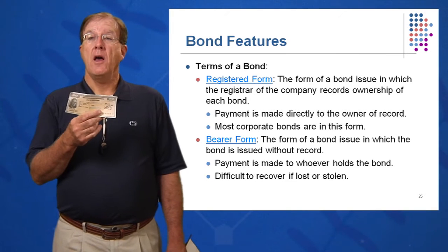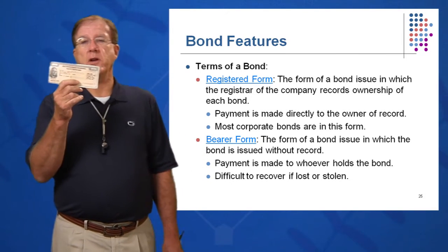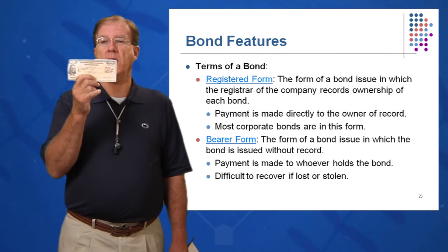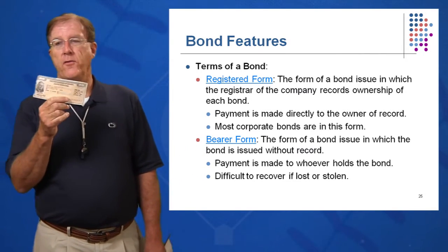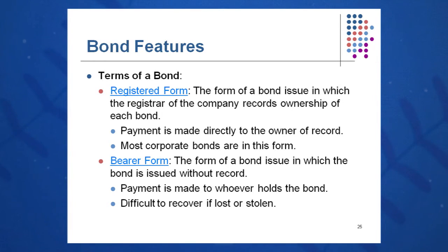Most corporate bonds are registered these days, and treasury bonds are in this format these days. Bearer bonds — in some of the old days — meant that whoever held the bond was entitled to cash it. So if you dropped it on the ground and lost it, too bad. The recommendation is always buy bonds in registered form.